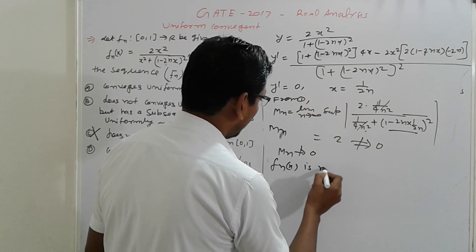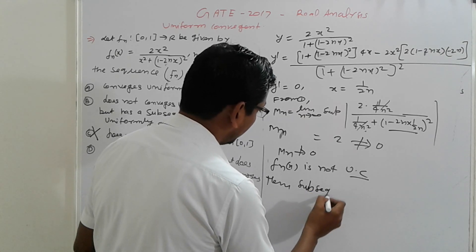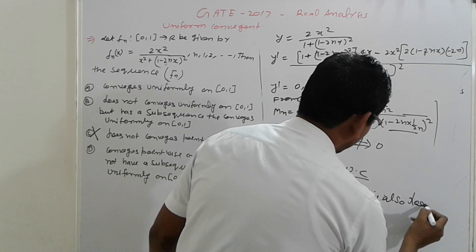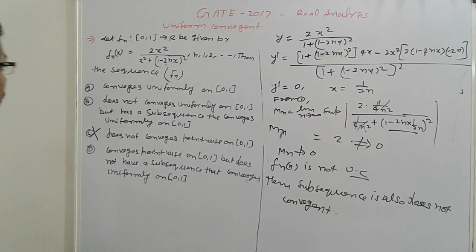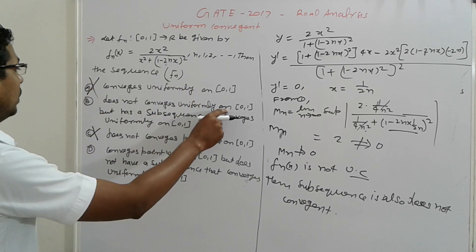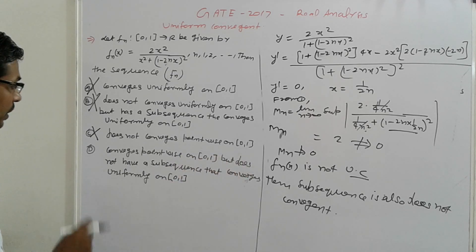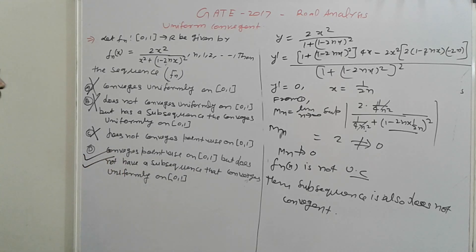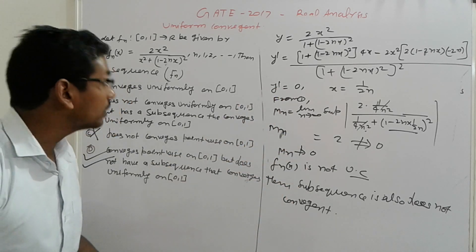It means sequence f_n(x) is not uniform convergent, then subsequence is also does not converge. So now come to the options: converges uniformly on [0,1], that is wrong. Does not converge uniformly on [0,1] but has subsequence converge uniformly, also wrong. Here which is not convergent, simple converge pointwise and but does not have subsequence that converge uniformly. So that is your answer is correct. That is a simple logical used by the MN test simplifier, so take care, thank you, bye bye.